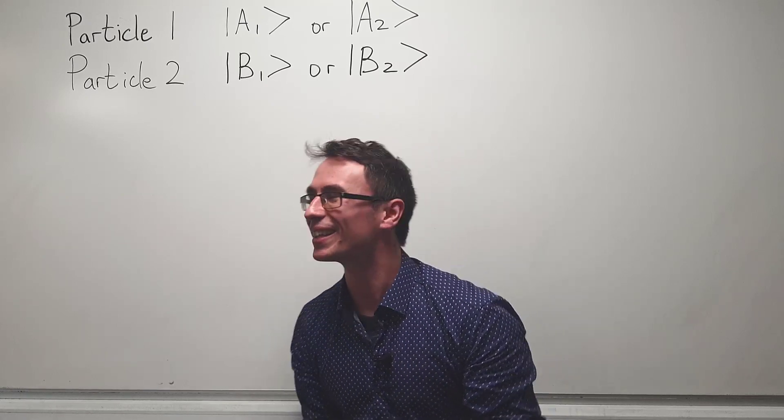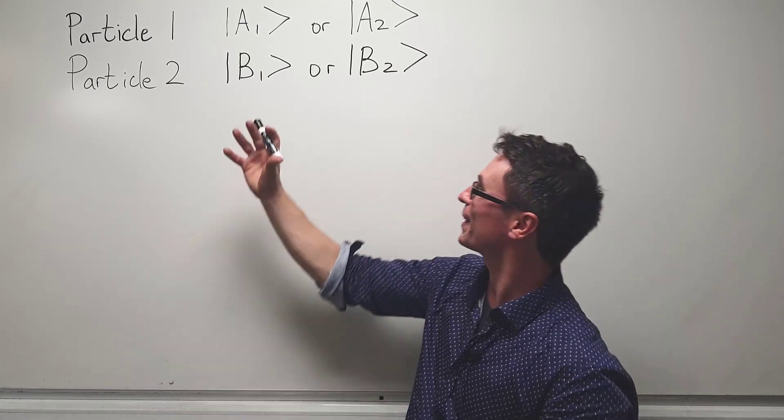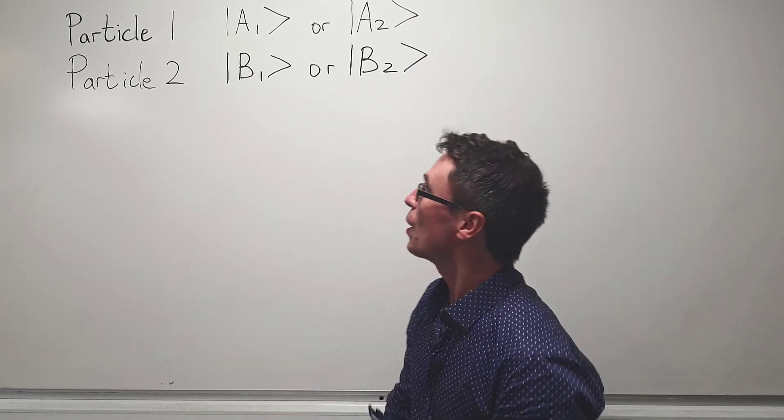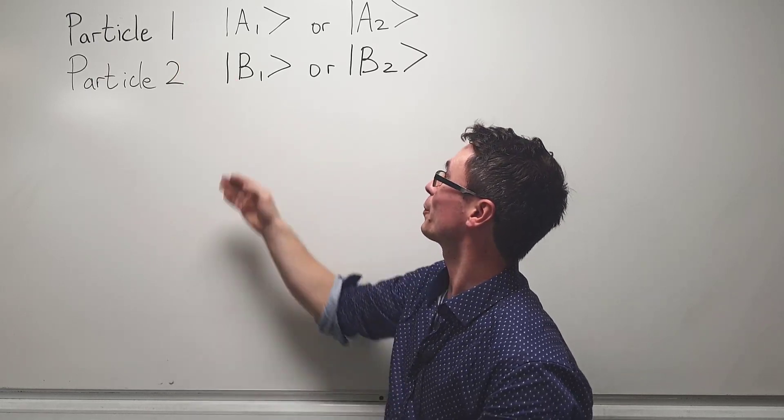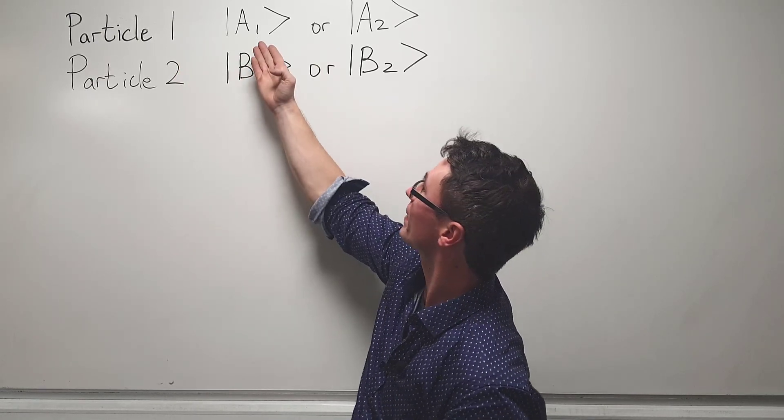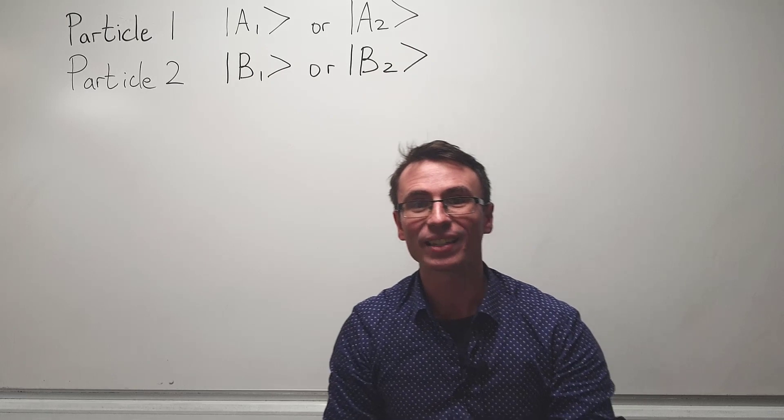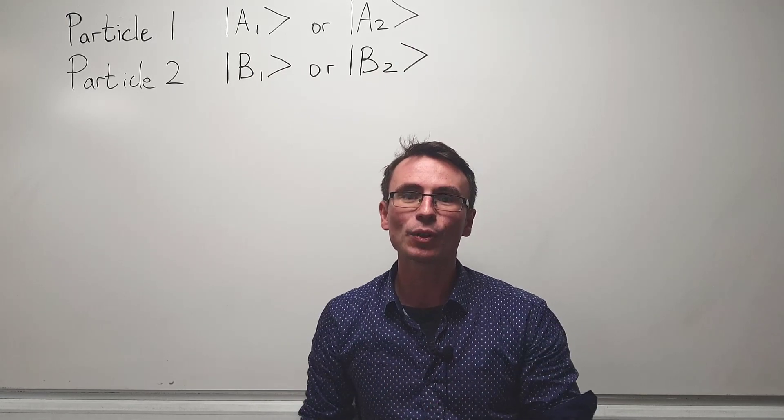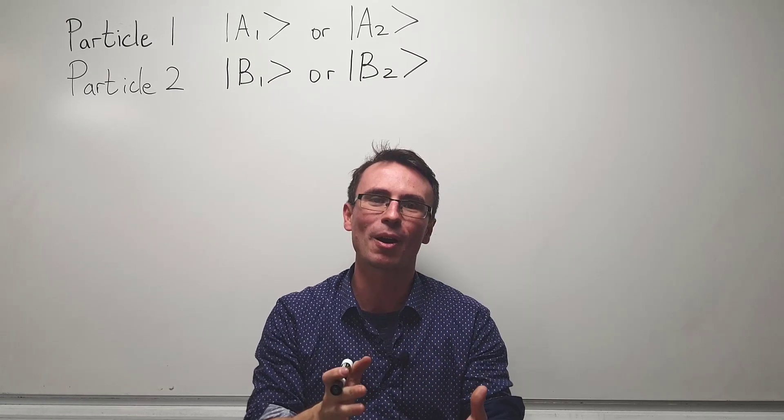In quantum mechanics we tend to represent the states of particles with these complex vectors. For instance, we're going to have particle one which could have two states, a one or a two. In practice this could represent a physical quantity such as the spin of a particle.